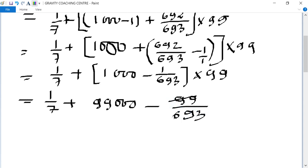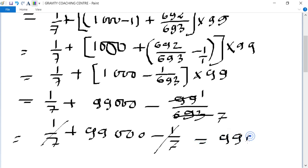Cancel by table of 7. So equal to 1 upon 7 plus 99 thousand minus 1 upon 7. Equal to 1 upon 7 plus 99 thousand minus 1 upon 7. 1 upon 7 cancels, equal to 99 thousand, which is the required answer.